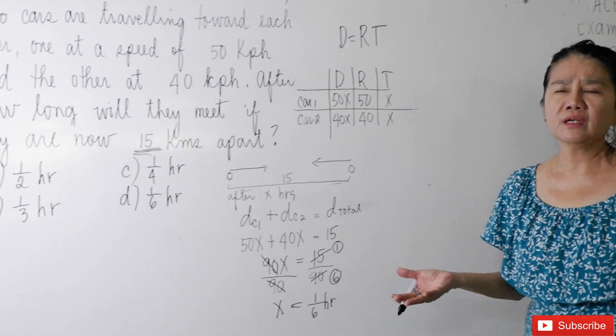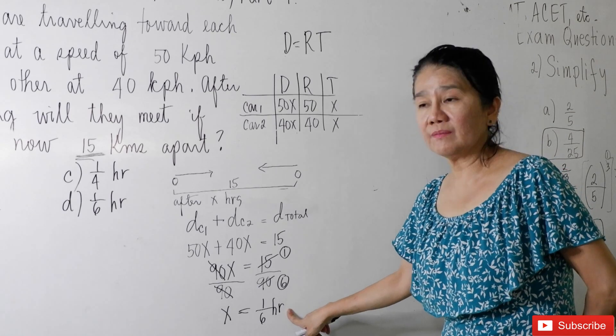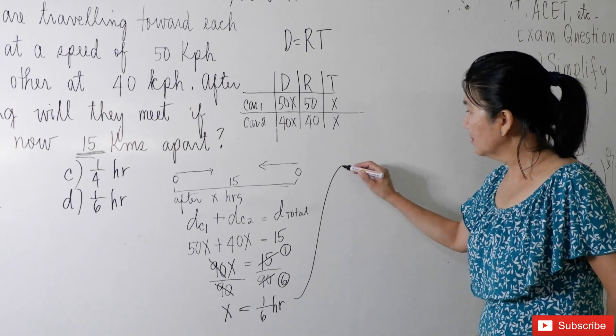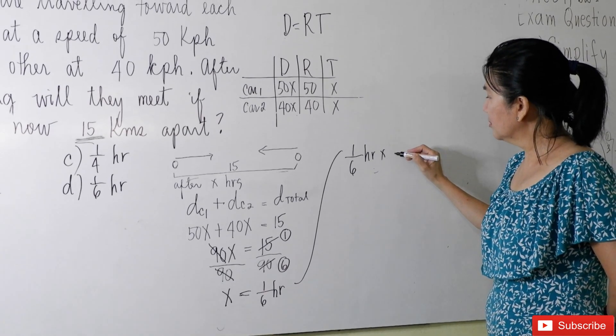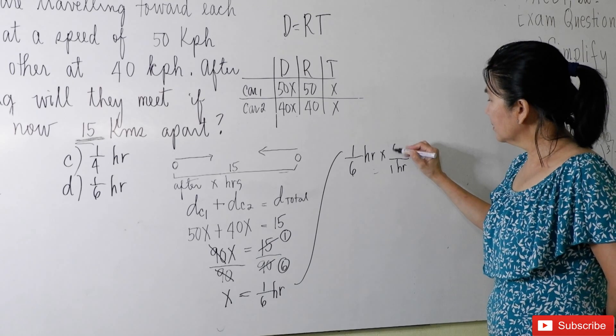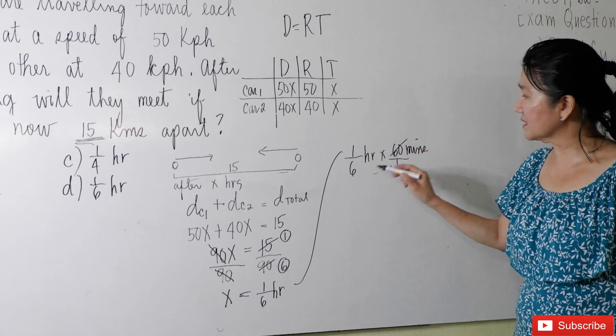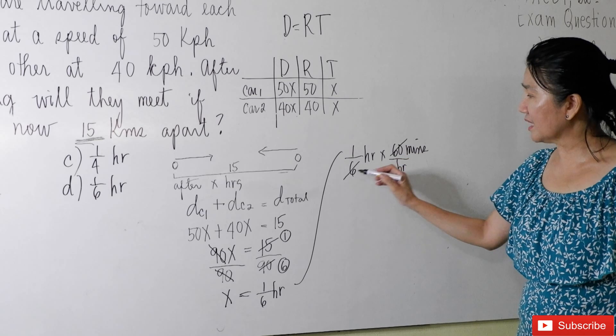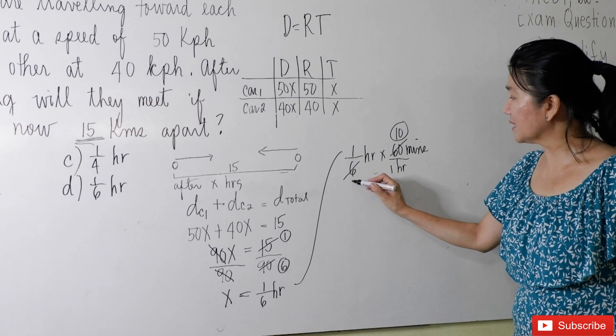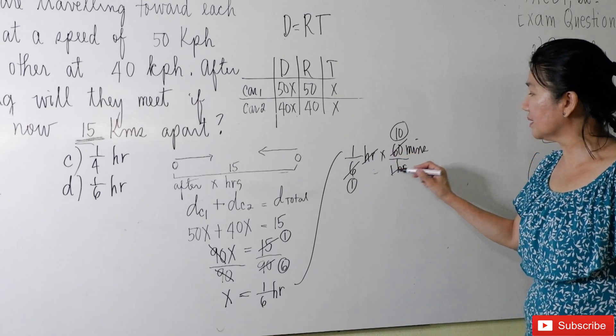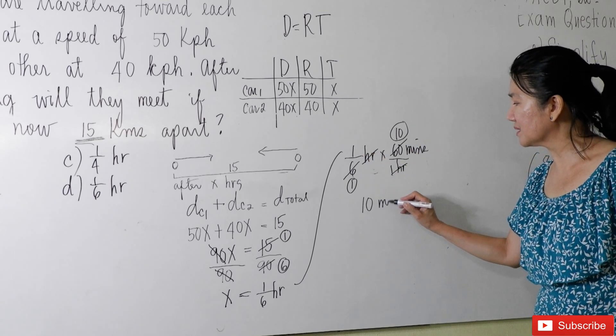What is 1 over 6 of an hour? In minutes, how do we convert an hour to a minute? 1 over 6 of an hour? So, 1 over 6 of an hour times 1 hour is equal to 60 minutes. We can now cancel 60 and 6. We can cancel, 60 divided by 6 is 10, 6 divided by 6 is 1. Take note that the hour also has been cancelled. So 1 times 10 is 10 minutes.